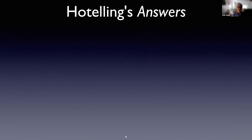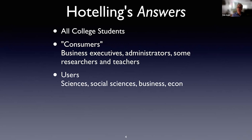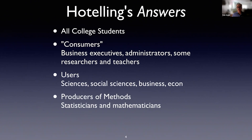Hotelling's answers were that we should think broadly — but broadly meant all college students — and he divided those college students into three groups. Consumers were those who needed to be able to read and digest other people's analyses and reports and act on those. Users were those who needed to apply statistical methods and perform data analysis. And finally there were producers, who were those developing new methodology and evaluating methodology.